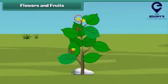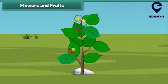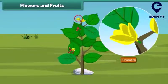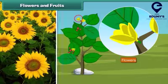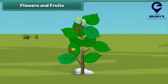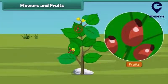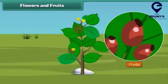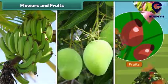Friends, now let's learn about the most attractive and beautiful part of the plant — yes, that is the flower! Flowers are of different colors and types, like sunflower, rose, and dahlia. I know that most of you also like fruits. Fruit is the juicy part of the plant, and fruits come in different shapes, sizes, and colors, like banana, mango, apple, and orange.